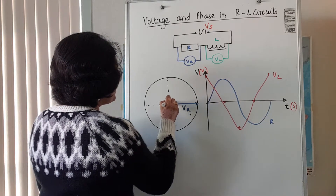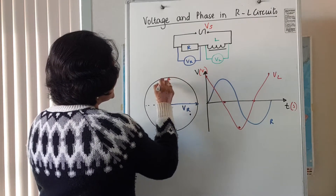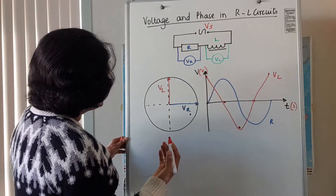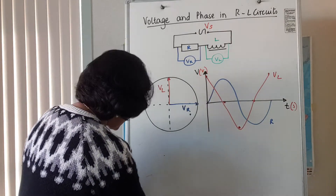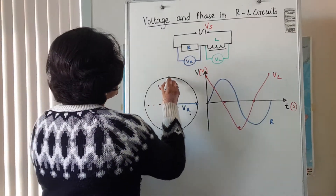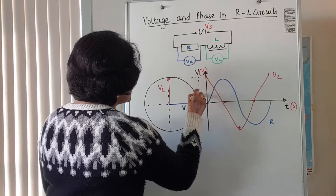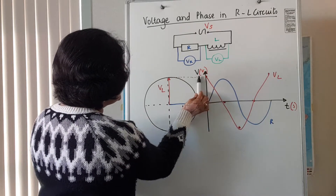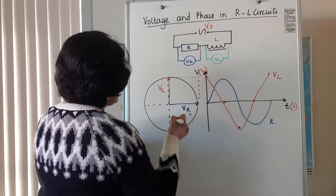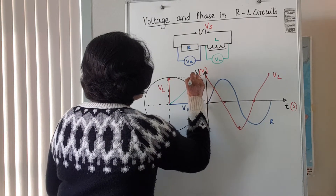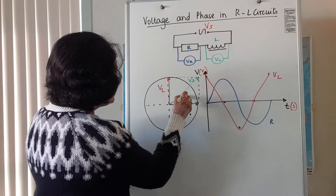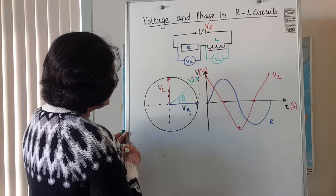The phasor representing the voltage across the inductor is actually leading the voltage across the resistor. The way we get our supply voltage is by adding these two vectorially. When we do that, we complete a parallelogram of vectors by drawing parallel lines, and the diagonal gives us the supply voltage. In this case, the supply voltage leads the resistor voltage by theta degrees.